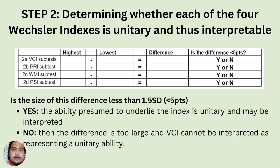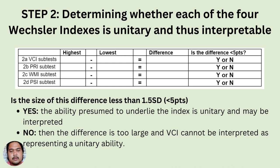Step 2: Determine whether each of the four Wechsler indexes is unitary and thus interpretable. Make a table that includes the VCI, PRI, WMI, and PSI subtests, record the highest and lowest scores, subtract to find the differences. If the difference is less than five points or less than 1.5 standard deviations, the ability underlying the index is considered unitary and may be interpreted. If not, the difference is too large and the index cannot be interpreted as representing a single unitary ability.